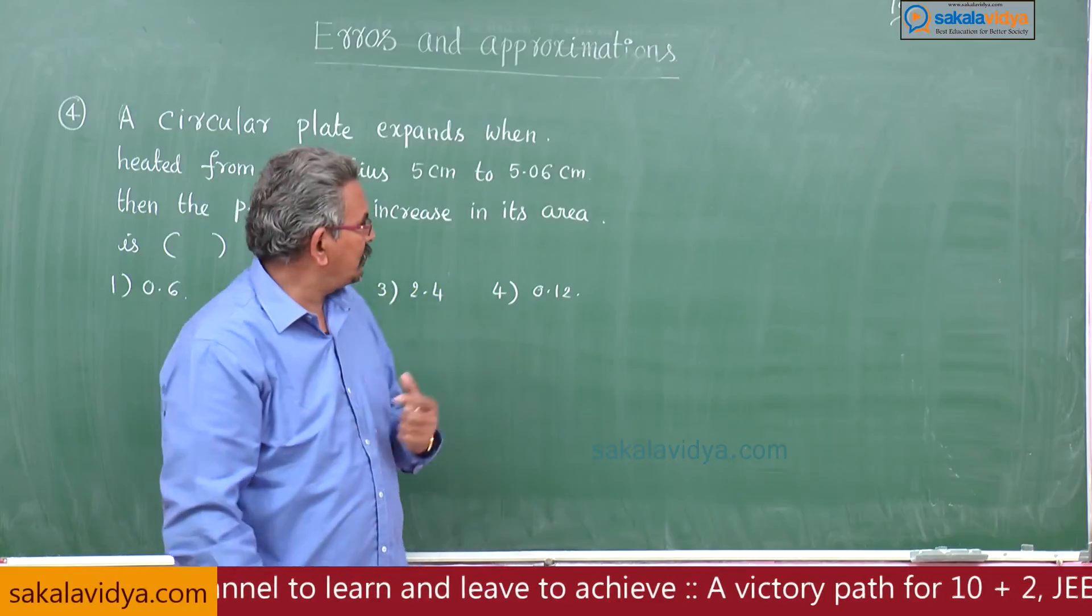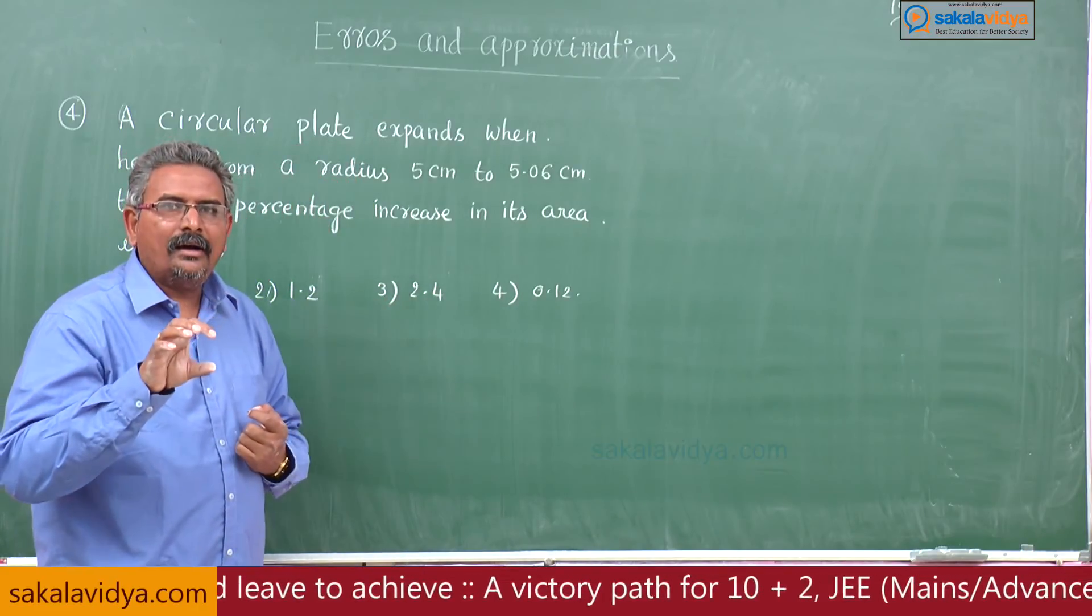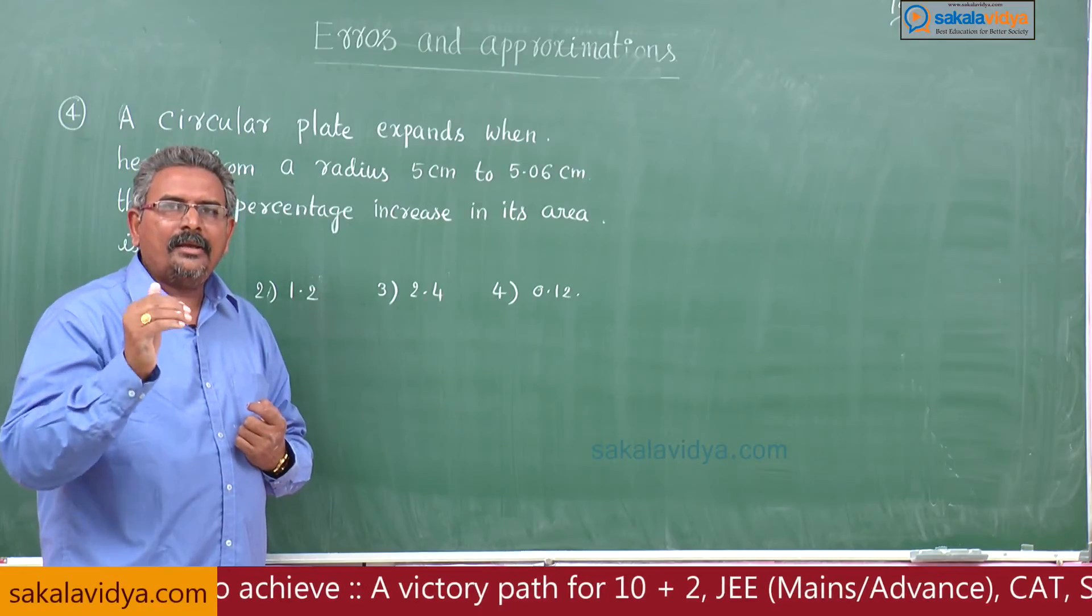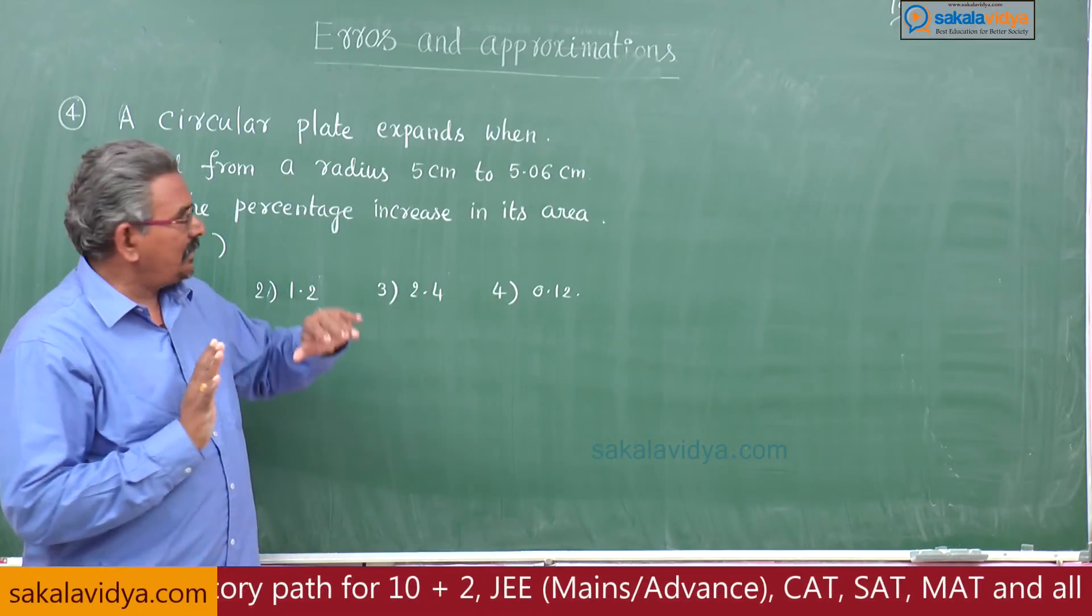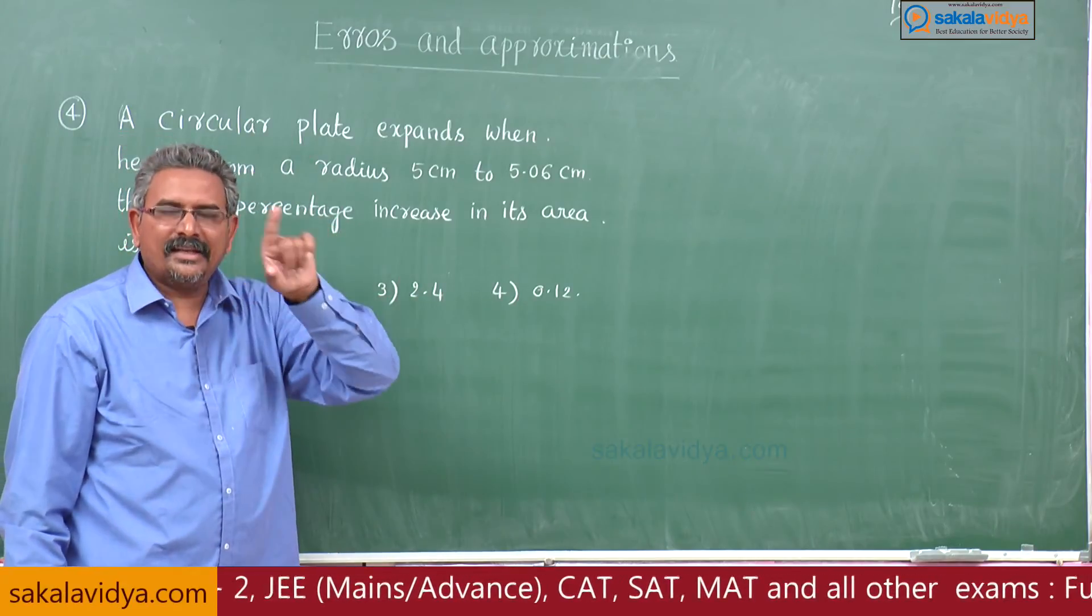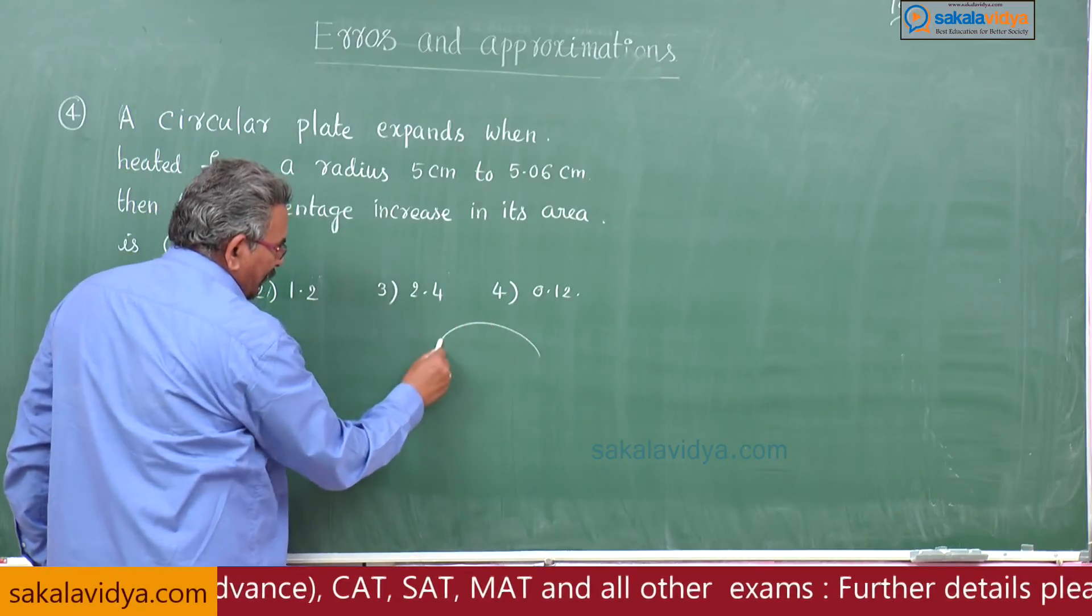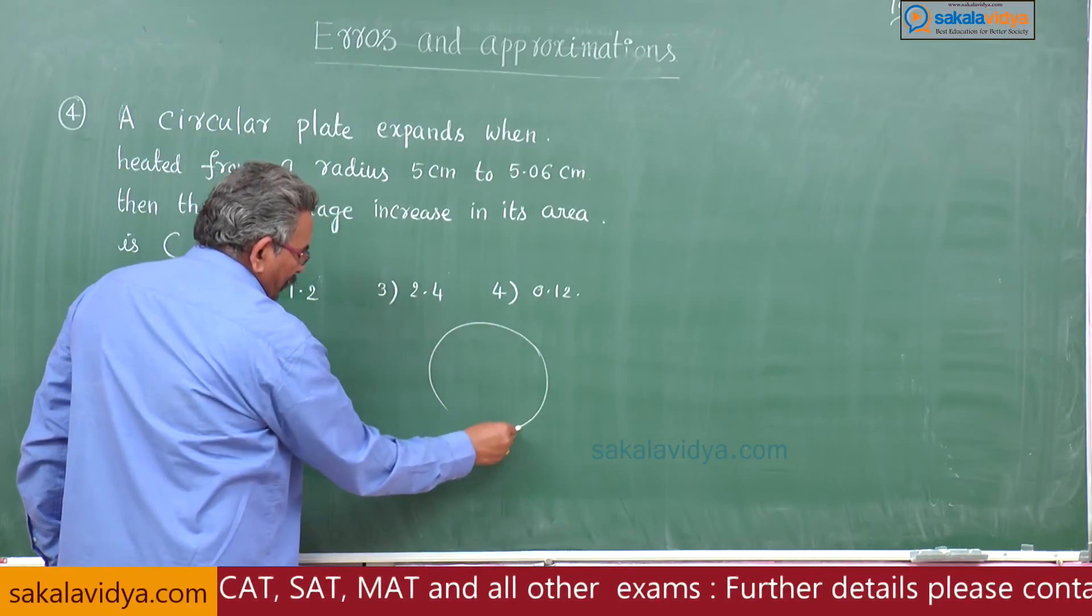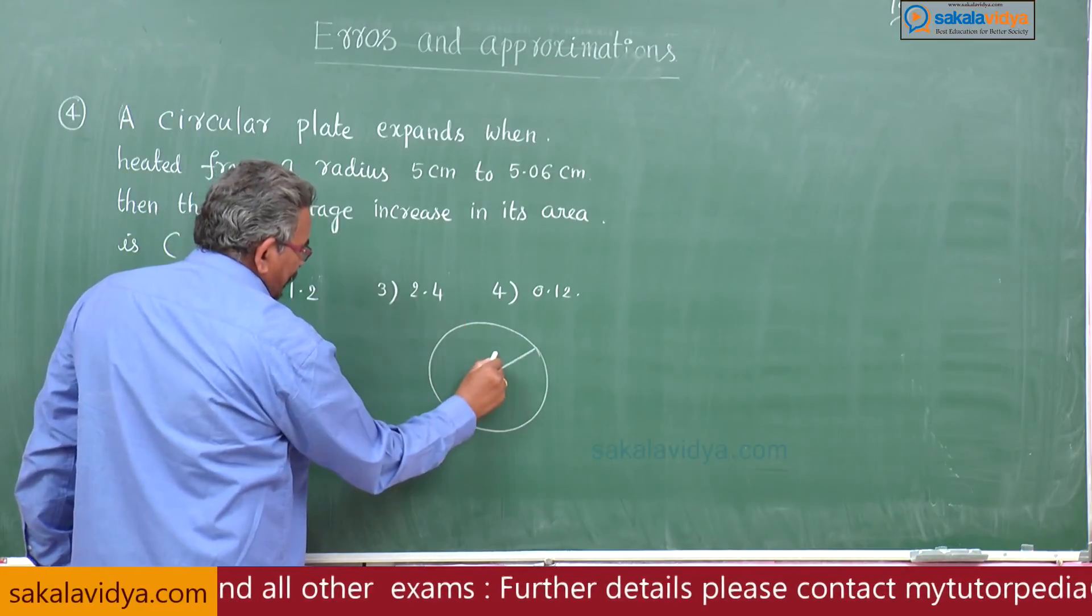What we have to find out? We have to find out percentage increase in the area, that means delta a by a into 100 we have to calculate. This problem is actually related to the circular plate means circle. Let us draw a figure, rough diagram, this is circle whose initial radius is 5 centimeters.